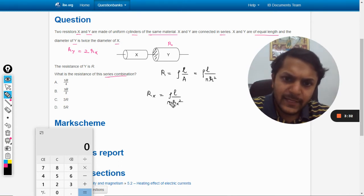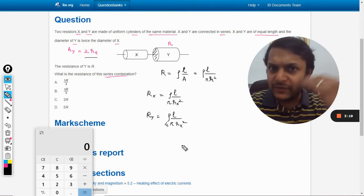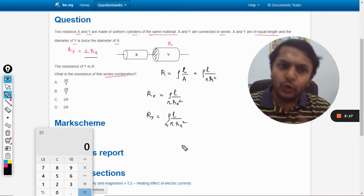Since ry is double rx, when squared it becomes four times rx squared. So this can be directly substituted, and Ry becomes Rx divided by four.